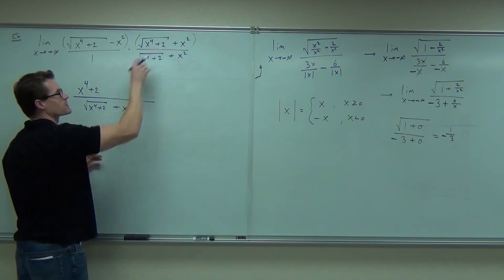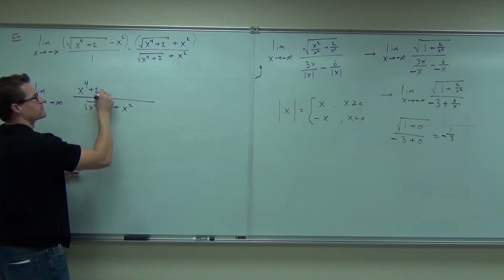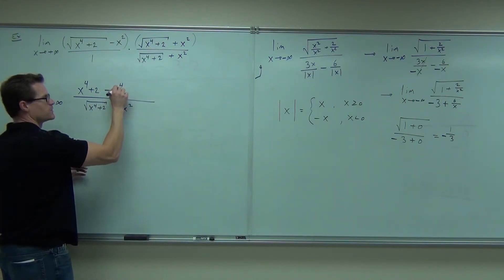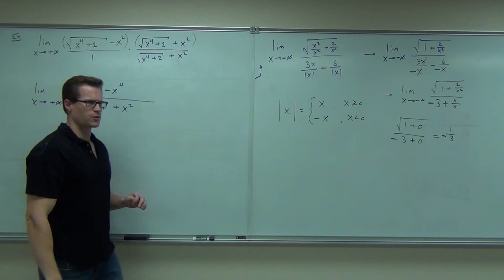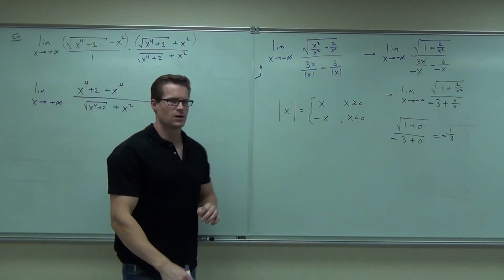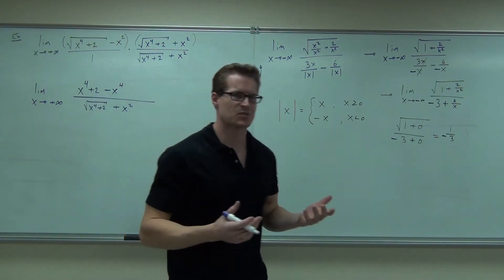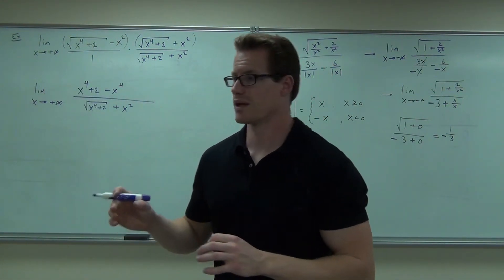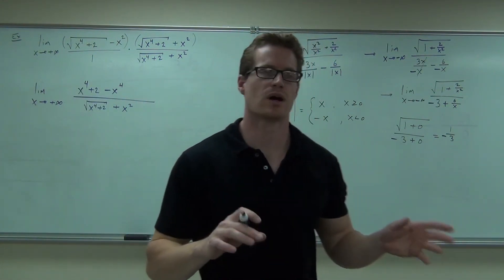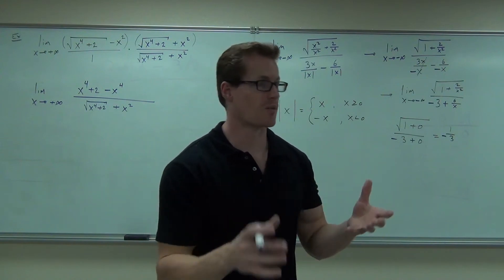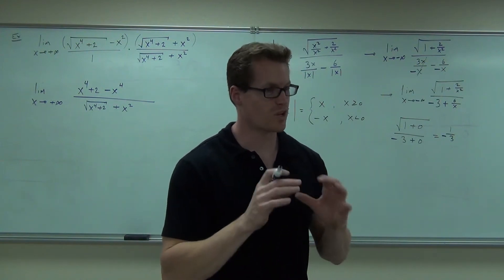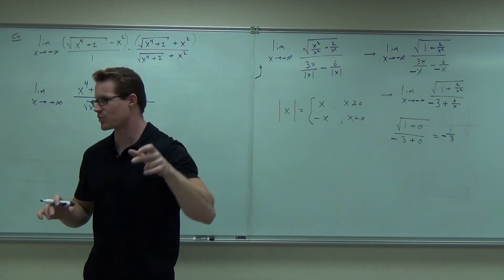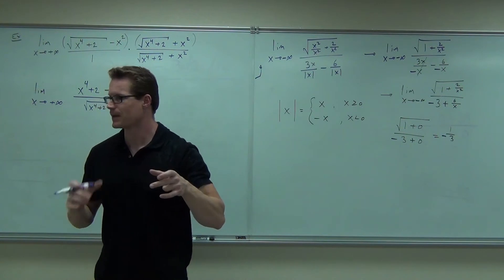And then we're going to get — what's the last thing? You see the minus x to the fourth? Don't forget about the exponent. If you make the exponent incorrect, it's not going to come out right. So you've got to really be careful about your distribution. Don't forget to distribute that last part.